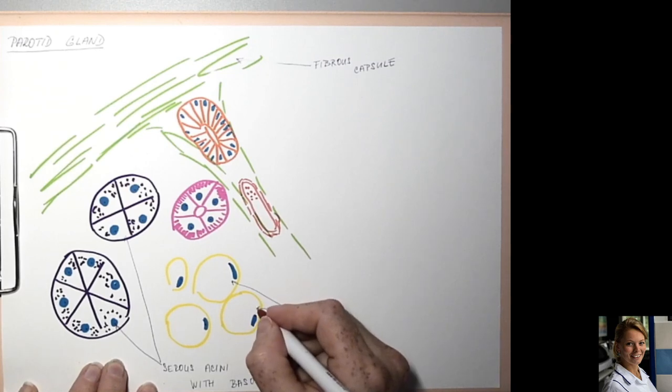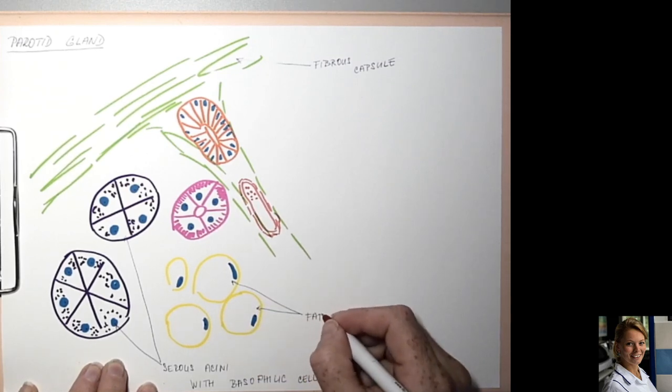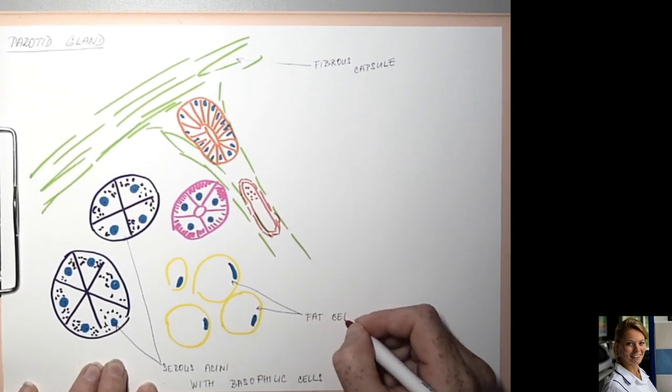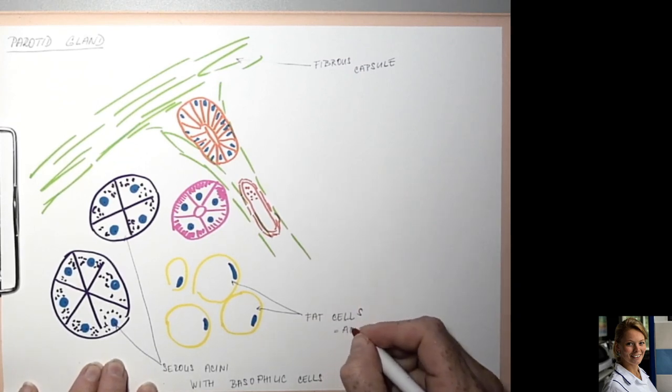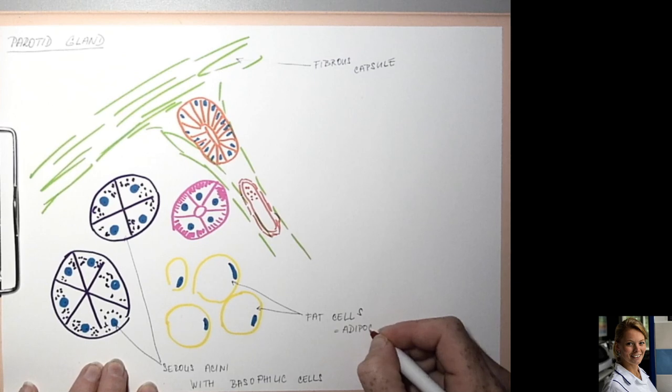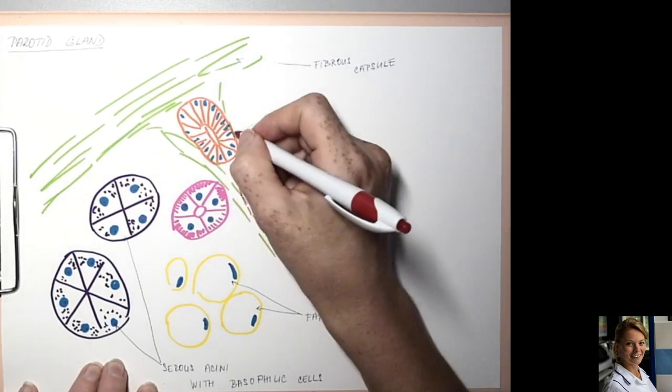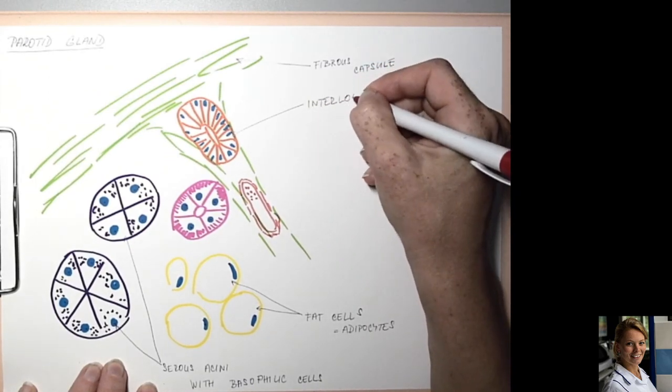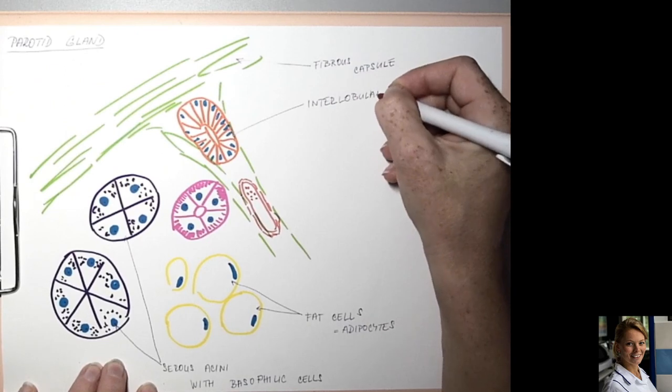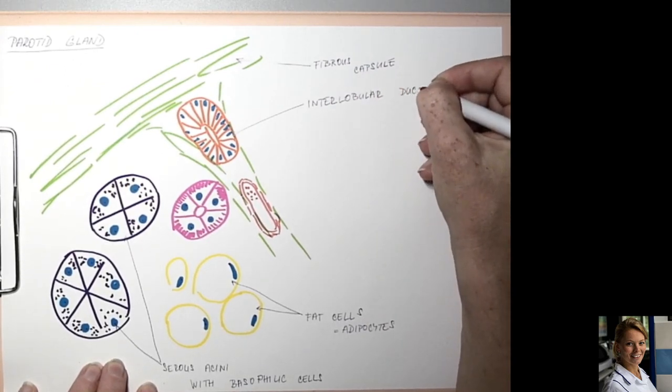Fat cells, also called adipocytes. Here are the basophilic cells. And here is the interlobular duct.